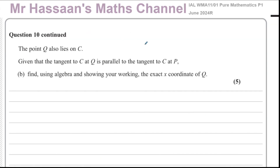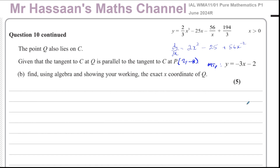For part B: point Q also lies on C. Given that the tangent to C at Q is parallel to the tangent to C at P, find using algebra and showing your working the exact x-coordinate of Q. Since the tangents are parallel, the gradient of the tangent at Q is the same as at P, which is negative 3. So at Q, dy/dx equals negative 3.